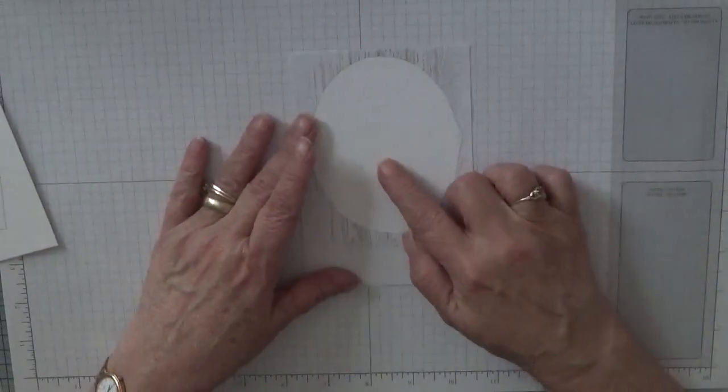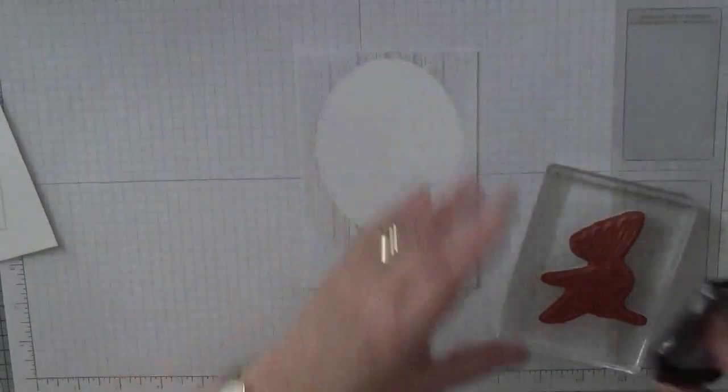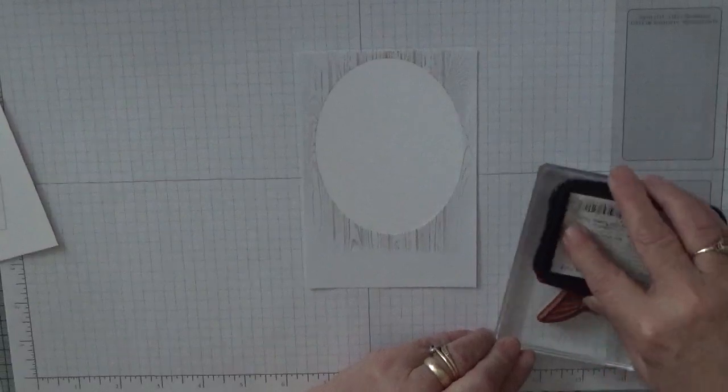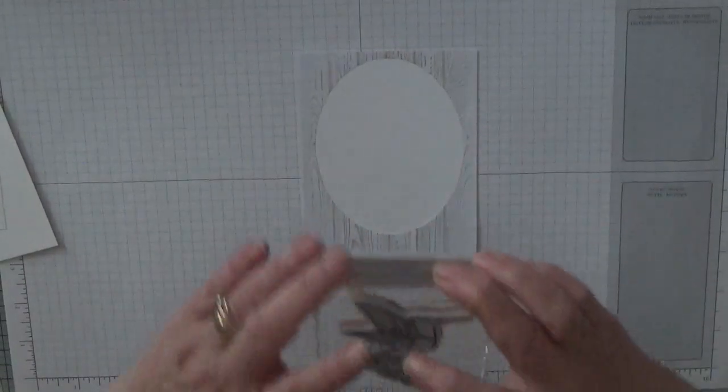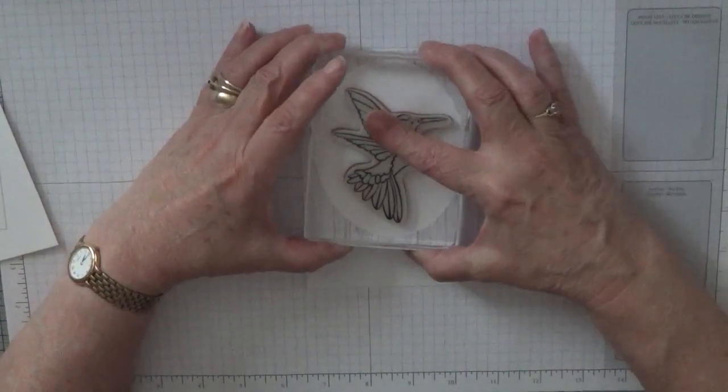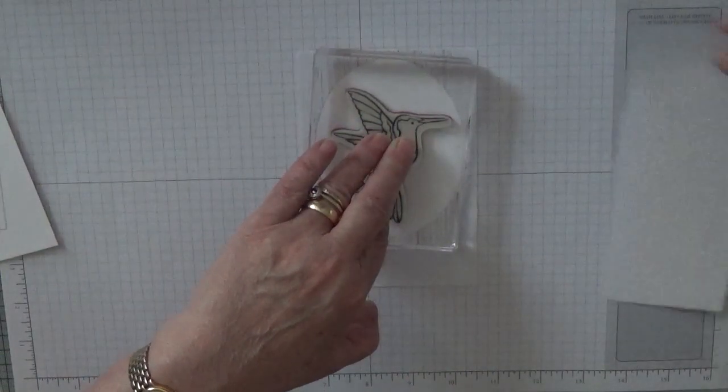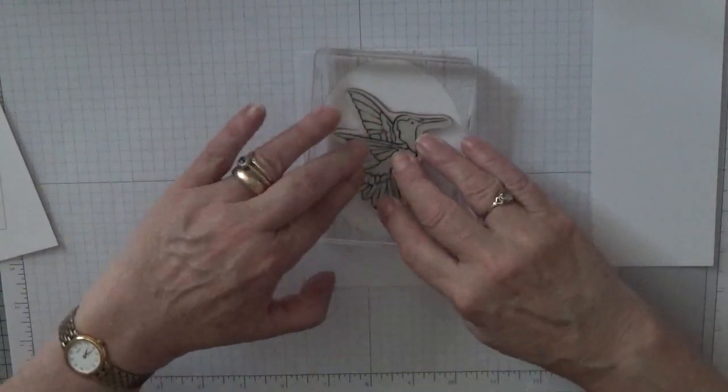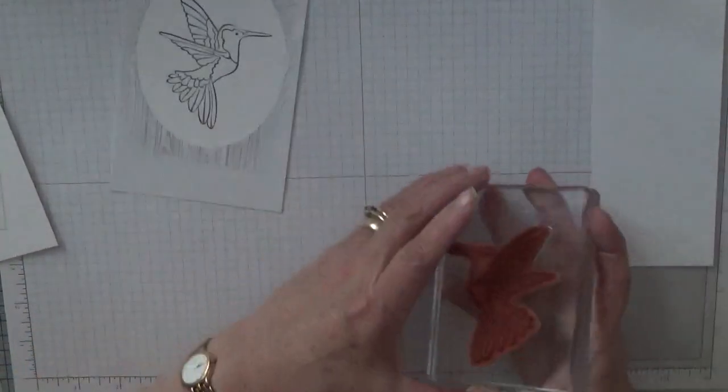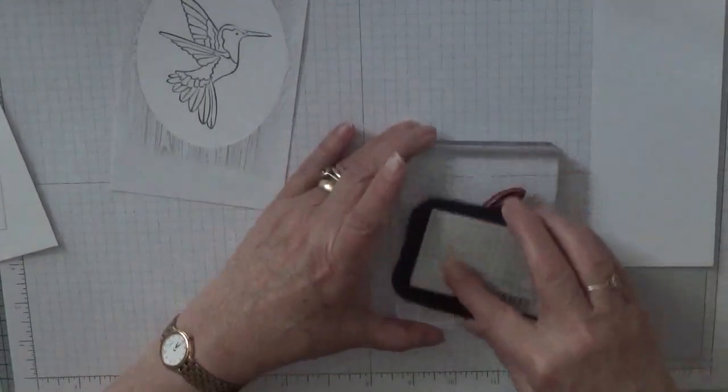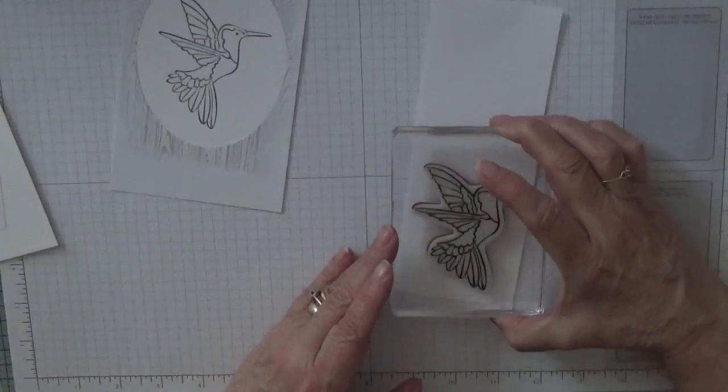So the first thing we want to do is stamp. This is the flat one. So we're going to stamp the bird in the middle of the oval. And stamp that there. You'll also need a scrap of white to, if you're having your bird raised, you're going to put it on dimensionals. So you'll need to stamp a separate bird if you're going to have a raised one.